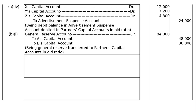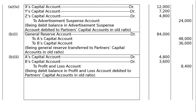Now, the Profit and Loss account has a debit balance of Rs.8,400 — it is to be written off. A's capital account debited, B's capital account debited to Profit and Loss account. The amount being Rs.4,800 for A and Rs.3,600 for B in the debit column, and Rs.8,400 in the credit column for the Profit and Loss account. Being debit balance in Profit and Loss account debited to partners' capital accounts in old ratio.